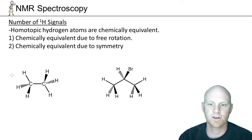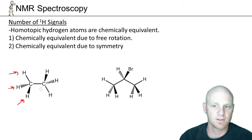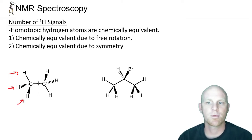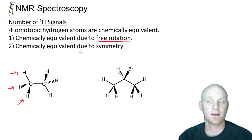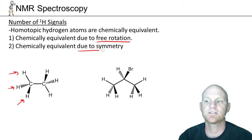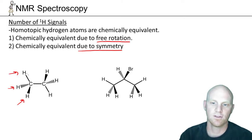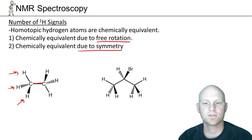If we first look at these three hydrogens off on the left-hand side, they're all chemically equivalent. We need a reason for why they're chemically equivalent, and it usually comes down to one of two things: either free rotation around a carbon-carbon single bond, or chemical equivalence due to symmetry. In this case, these three hydrogens are chemically equivalent because the single bond between the carbons is free to rotate.